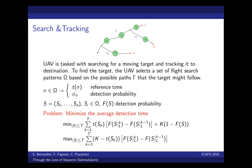We have a UAV that is tasked with searching for a target moving over a road network and tracking the target to a destination. To find the target, the UAV selects a set of flight search patterns Omega based on the possible paths that the target might follow. And for each pattern sigma in Omega, we associate to it a timestamp that is a reference time of when that pattern can be executed, and a detection probability.